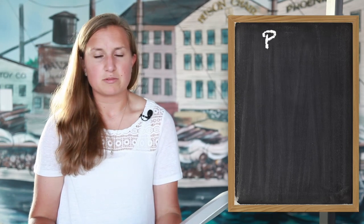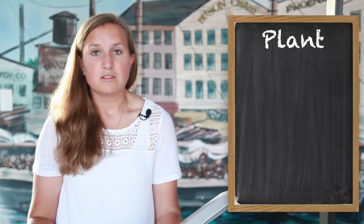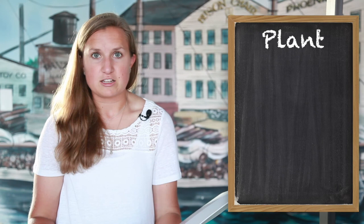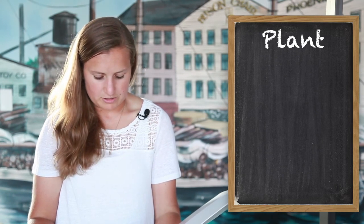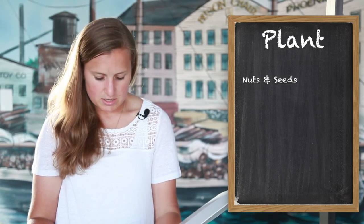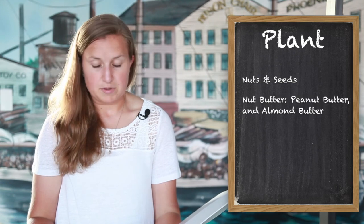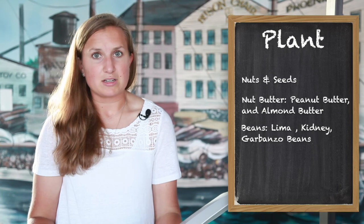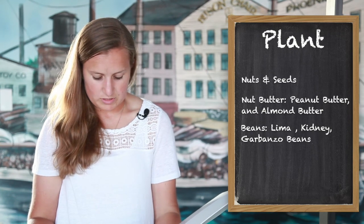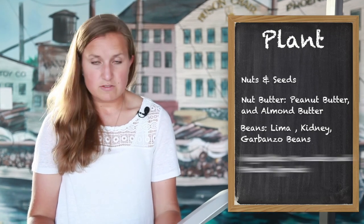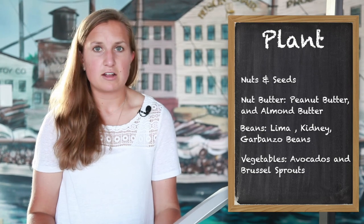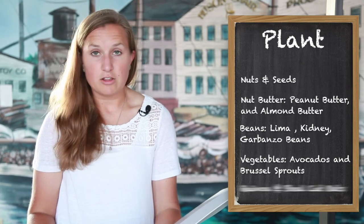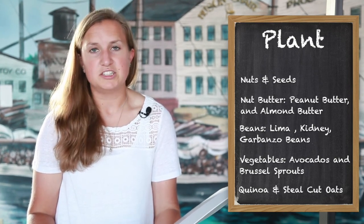But we can also get protein from plant foods. This is important for people that do not like eating meat. Plant-based protein foods include nuts and seeds, nut butters like peanut butter and almond butter, beans like lima and kidney beans and garbanzo beans and hummus. Even vegetables have protein such as avocado and Brussels sprouts. Other sources include quinoa and steel-cut oats.